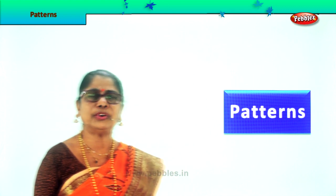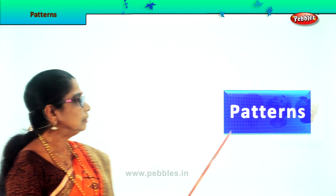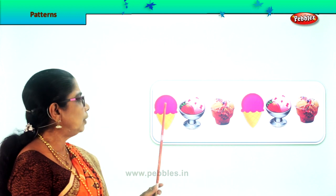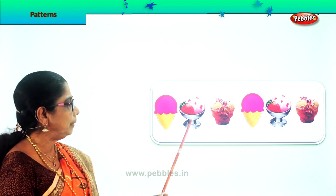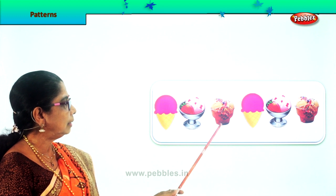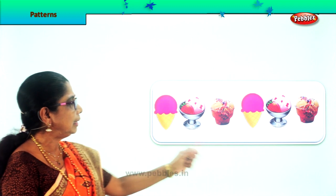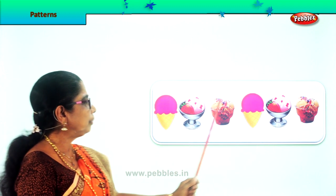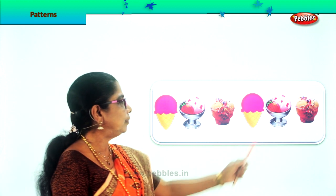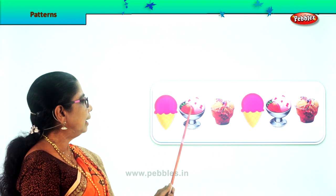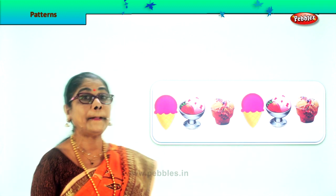Let us look at some patterns and enjoy them. First let us know what pattern we are talking about. Look at this now. What is the pattern followed here? We have a cone ice cream, then we have a cup ice cream, then another ice cream. Then again corn. We are repeating these. So we have first a corn ice cream, then a strawberry cone, then a cup ice cream, then a chocolate ice cream — following and repeating the same.